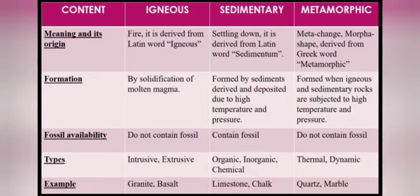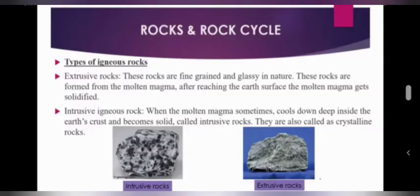Now let us discuss igneous rocks in detail. There are two types: extrusive and intrusive. Extrusive igneous rocks are fine-grained and glassy in nature. These rocks are formed from molten magma that reaches the earth's surface, where the molten magma gets solidified — moving from liquid to solid form.